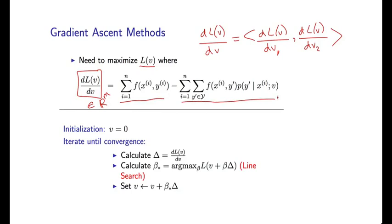And so the most naive gradient-based method would form as follows. We would initialize v to be the vector of all zeros. At each point we would calculate the gradient, call this capital delta, and then we'd basically do this search I was talking about before.